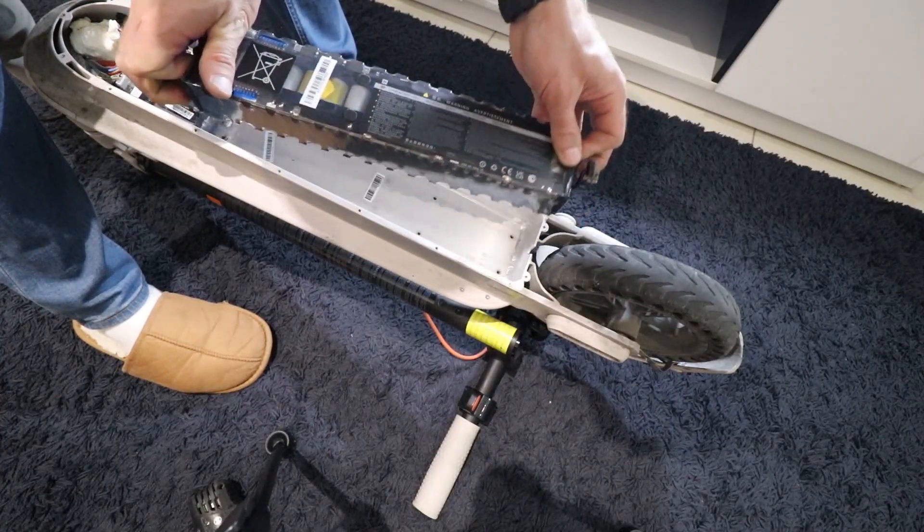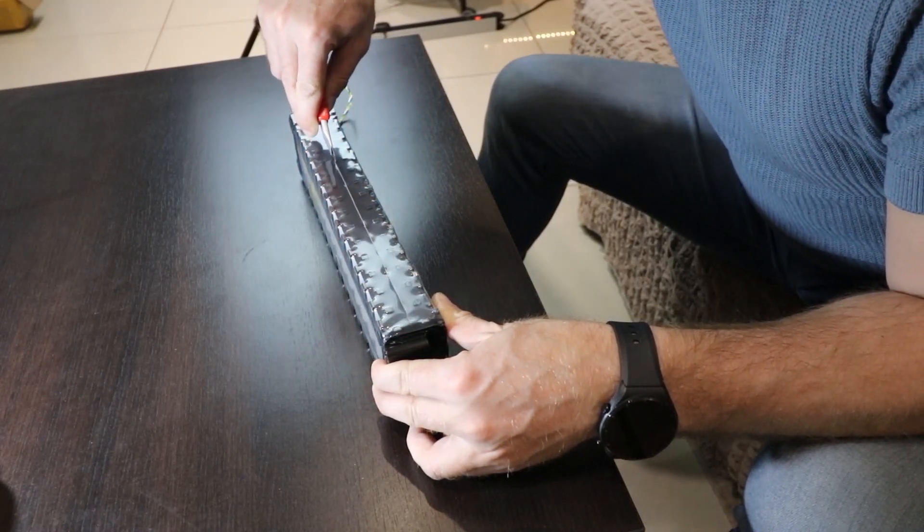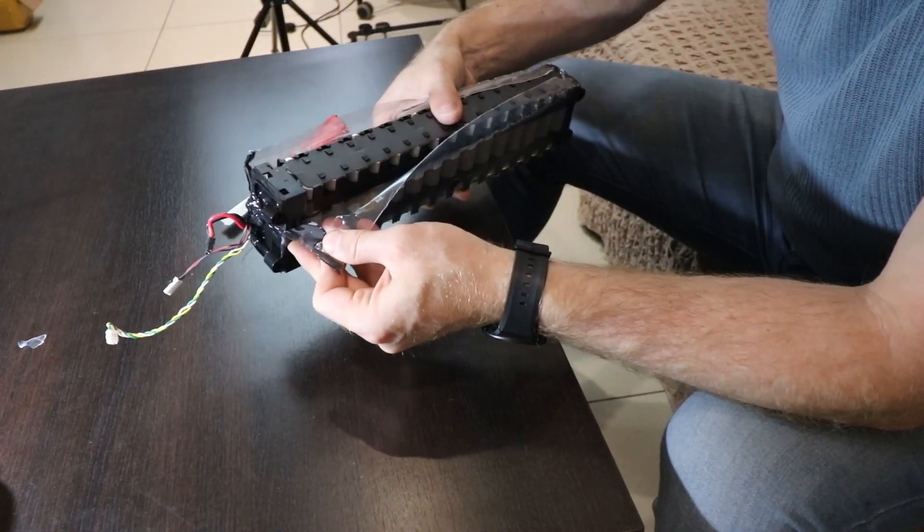You can now safely pull the battery out of the deck. To check the battery you will need to unfold it from the original cover. You can use a knife to cut in the middle.